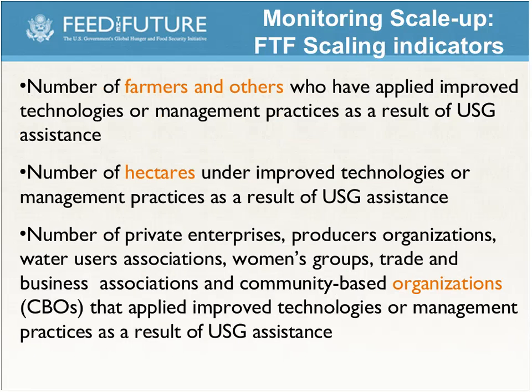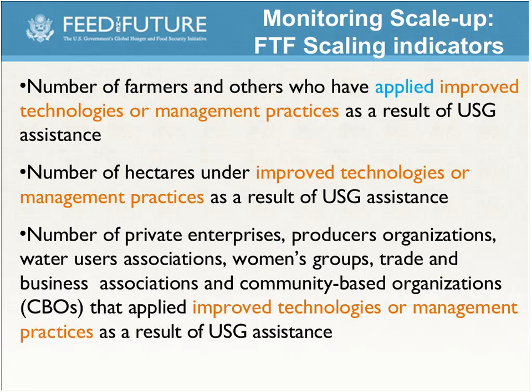There is this idea of applied versus adoption, and we've talked mostly about adoption over the past few days. Adoption is really a longer-term process, thinking back to Brett's timelines. This indicator focuses on that first step — farmers and others taking a risk and bringing a new technology into their agricultural systems. There's also the 'continuing' disaggregate, which looks at whether the farmer is applying it in the reporting year and also applied it in the previous year, indicating some level of adoption. Though over a five-year project, it's hard to say whether a farmer has fully adopted an improved technology or practice.